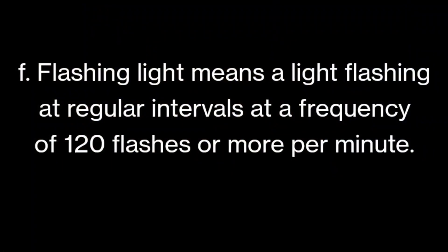Part F is about the flashing light. A flashing light means a light flashing at regular intervals at a frequency of 120 flashes or more per minute. That means two flashes per second. If a light flashes 120 or more times in a minute — two times per second — it qualifies as a flashing light. Anything less than that does not qualify.